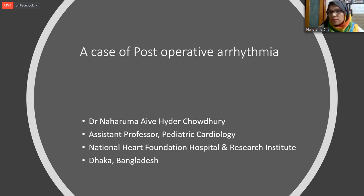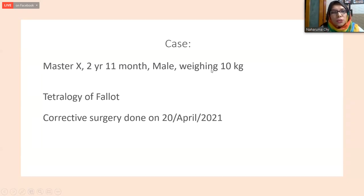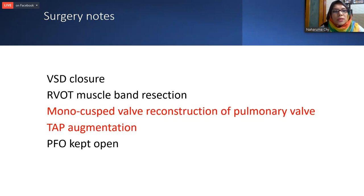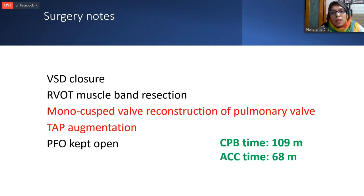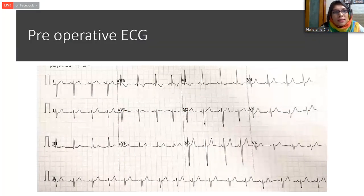Today I'm going to show a case who presented at the age of two years and eleven months — a male child weighing 10 kg, diagnosed as a case of tetralogy of Fallot, admitted for corrective surgery done on 20 April 2021. The surgeon performed VSD closure with right bundle muscle band resection, monocusp pulmonary valve reconstruction with transannular patch augmentation, and kept a patent foramen ovale. Cross clamp time and cardiopulmonary bypass time were acceptable for the child.